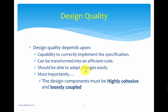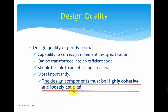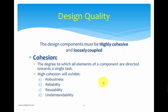There is one mantra for design quality — a basic thumb rule in software engineering: design components must be highly cohesive and loosely coupled. To understand what highly cohesive and loosely coupled means, we first need to understand what cohesion and coupling are. So first, we shall understand cohesion.